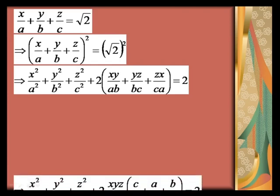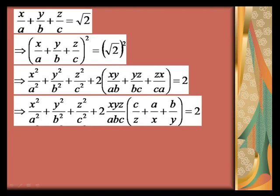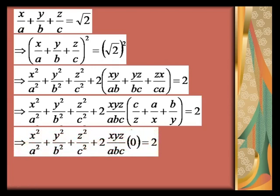In other words, we can write x²/a² + y²/b² + z²/c² + 2·(xyz/abc)·(c/z + a/x + b/y) = 2. And since a/x + b/y + c/z = 0 is given, by substituting that value as 0, we get x²/a² + y²/b² + z²/c² + 2·(xyz/abc)·0 = 2.